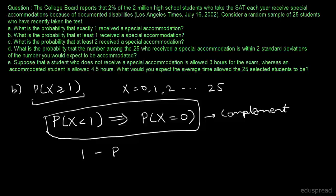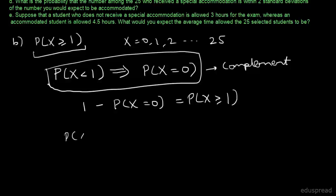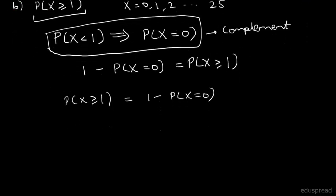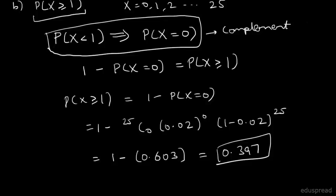If we subtract the complement probability from 1, we get P(X≥1). Calculating P(X=0) using the formula: 25C0 times 0.02 raised to the power 0 times 0.98 raised to the power 25. Solving this gives 1 minus 0.603, which equals 0.397. So the probability that at least one student received an accommodation is 0.397.